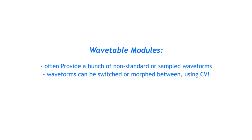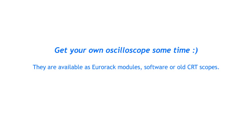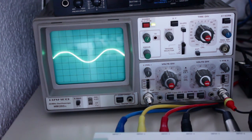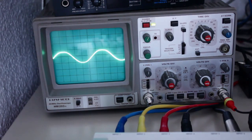Of course, this is all just the tip of the iceberg. You can create even more complex waveshapes easily. So-called wavetable modules also come with a wide variety of premade waveforms that you can sometimes even morph between. You should get an oscilloscope yourself at some point and see what kind of waves you can come up with. My oscilloscope is an old one with a CRT monitor inside, which I got used from eBay. It's big but it was cheap and does the job nicely.